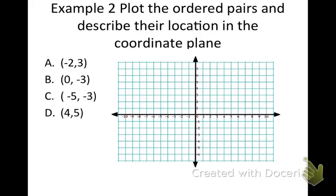Example 2: plot the ordered pairs and describe their location in the coordinate plane. We kind of did that in the previous slides, so we should be able to do this. Going to A: A says to go negative 2 and then positive 3. I'm going to go negative 2, positive 3, and label that spot. Now looking at B: I'm not going to go left or right, I'll stay at 0 but go down to negative 3. Right there is my next spot, and I'll label that as B.